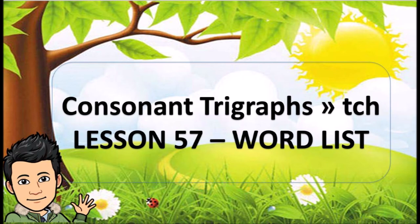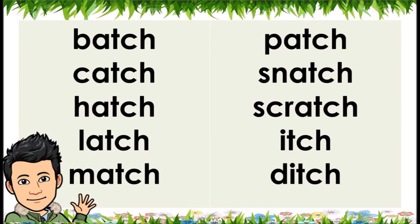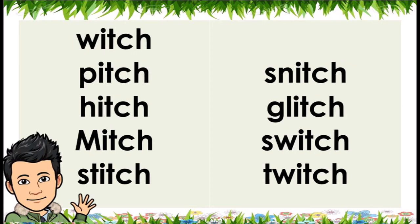Consonant Trigraphs TCH — Lesson 57. Word List: Batch, Catch, Hatch, Latch, Match, Patch, Snatch, Scratch, Itch, Ditch, Pitch, Hitch, Mitch, Stitch, Snitch, Glitch, Switch, Twitch.